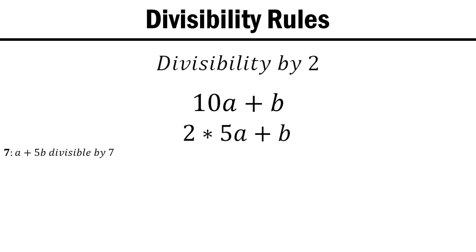No matter what you plug in for a, it will always be 2 times 5 times that a. Therefore, our number is only divisible by 2 if b, its last digit, is as well.